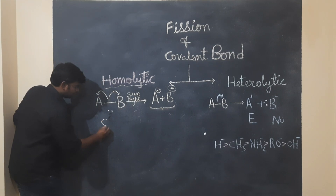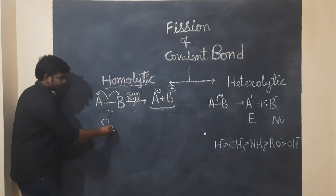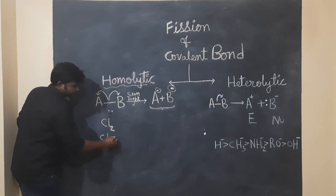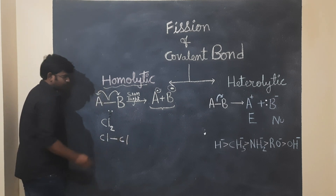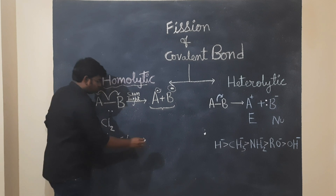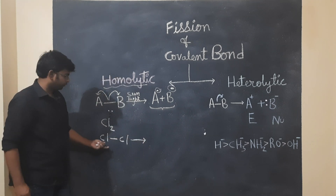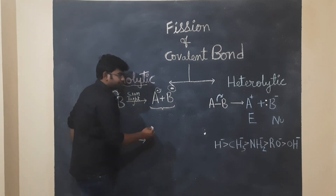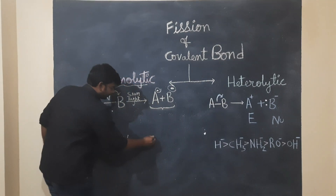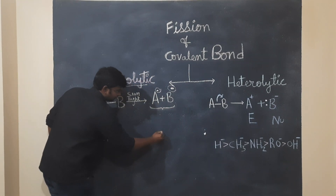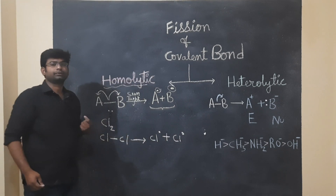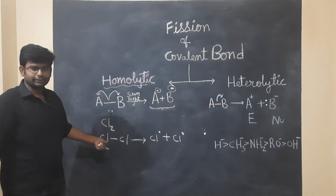For example, we have Cl2. This is the homolytic fission. In the presence of sunlight, Cl2 breaks into Cl plus Cl — these are free radicals.